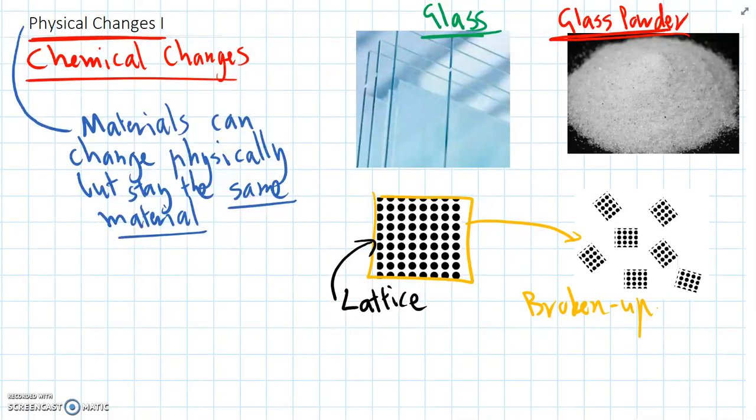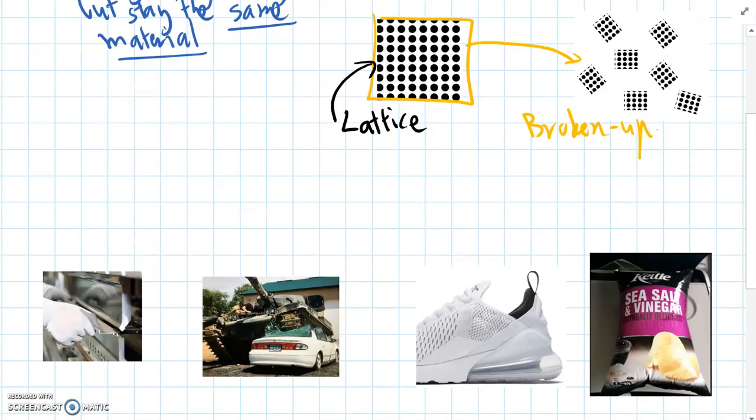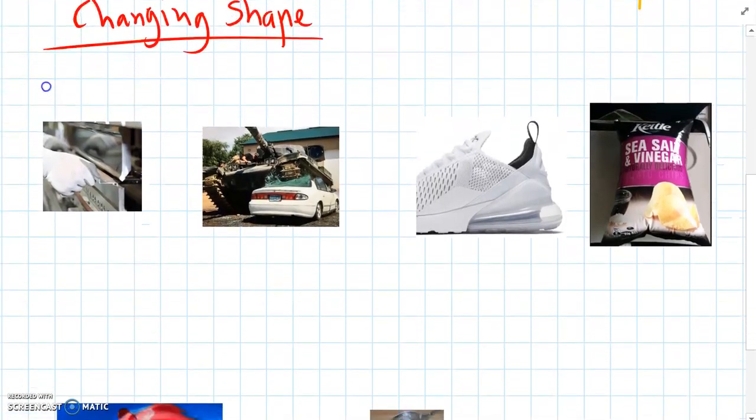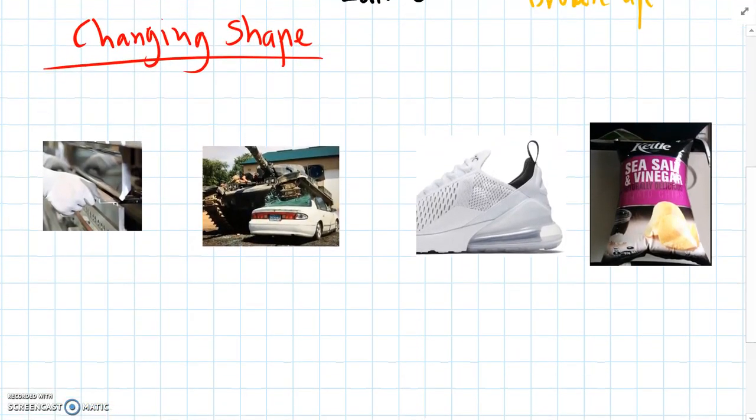So let's look at some different types of physical changes. One of the most common types of physical change is when you change the shape of a material. So changing shape. And there's lots of examples here that we can look at. We've got someone in a factory bending sheets of metal into a particular shape.